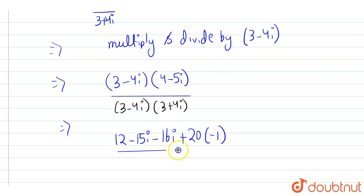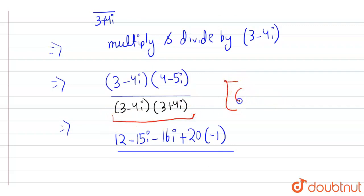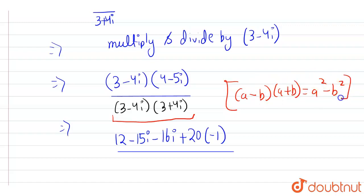For the denominator, we use the property (a - b)(a + b) = a² - b². Applying this: a² = 3² = 9, and b² = (4i)² = 16i² = 16 × (-1) = -16. So the denominator becomes 9 - (-16).